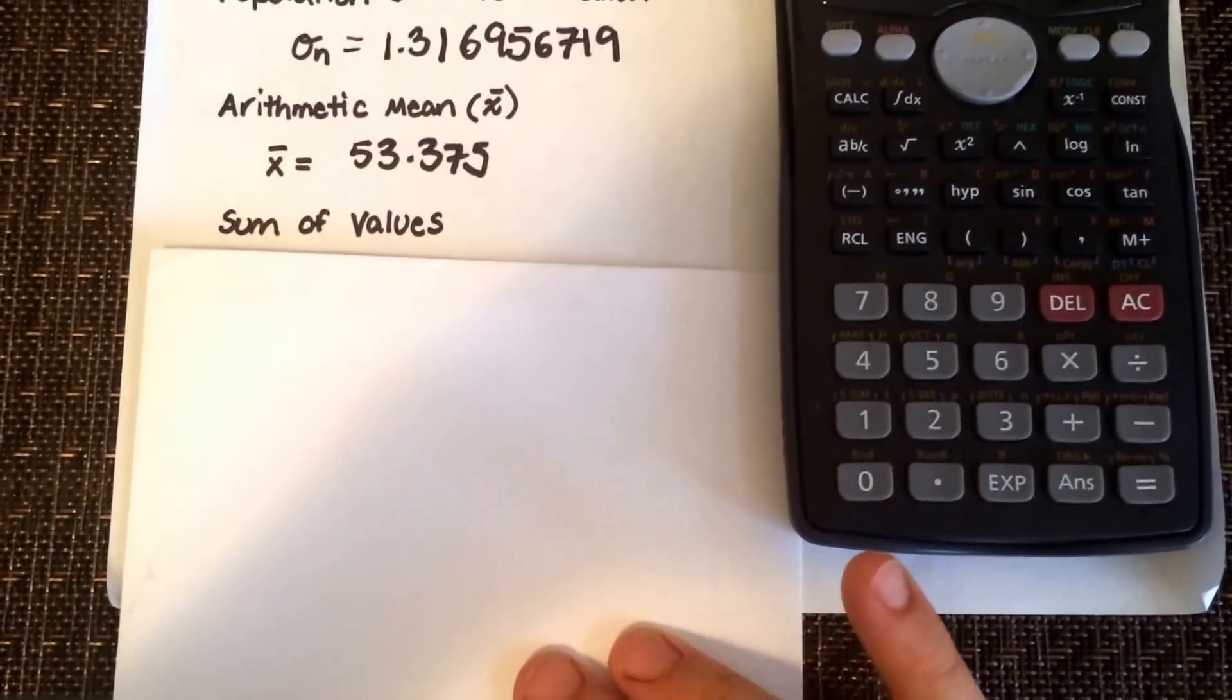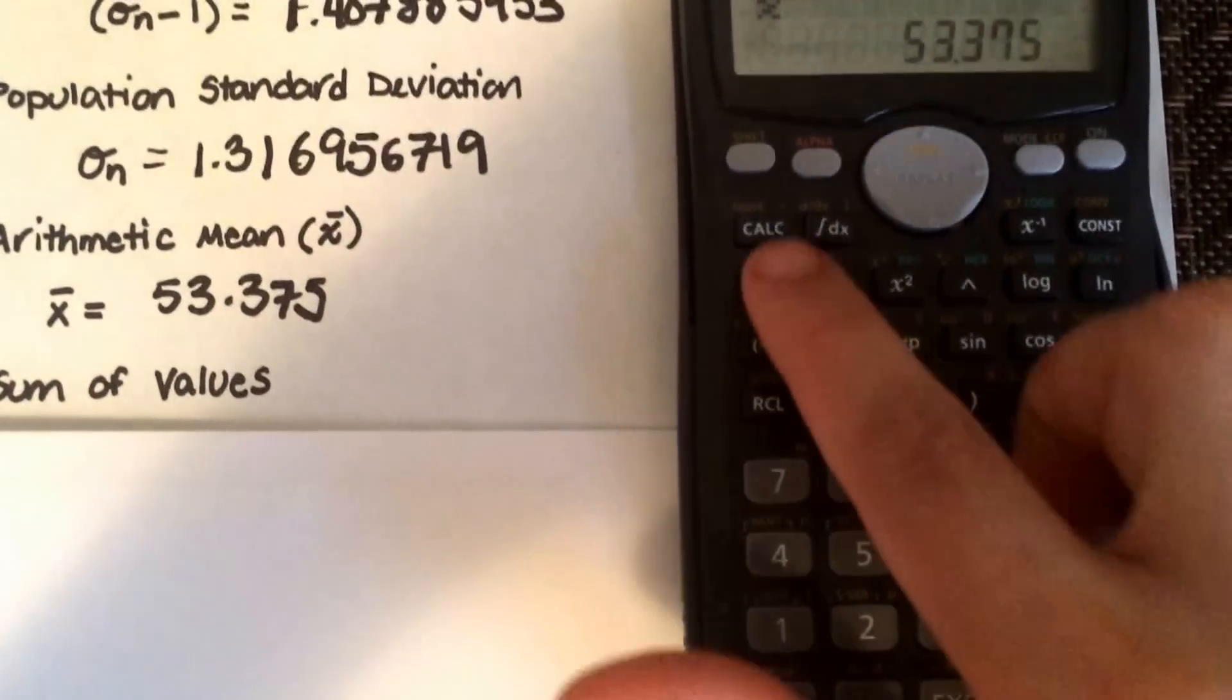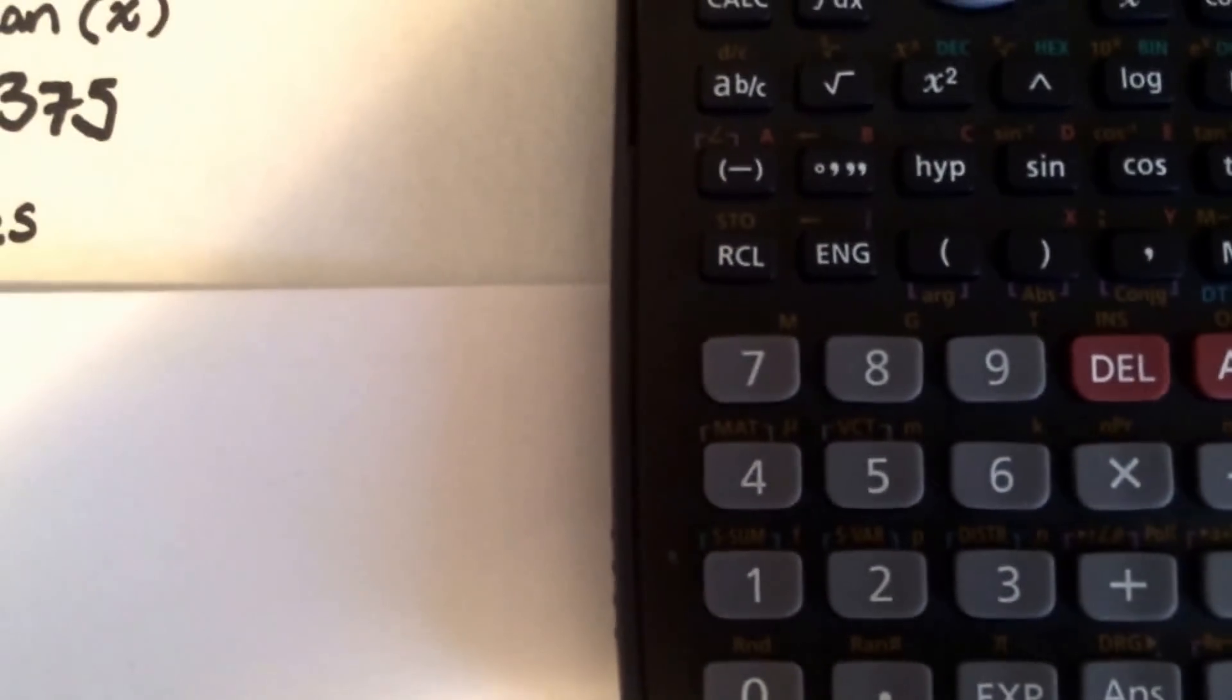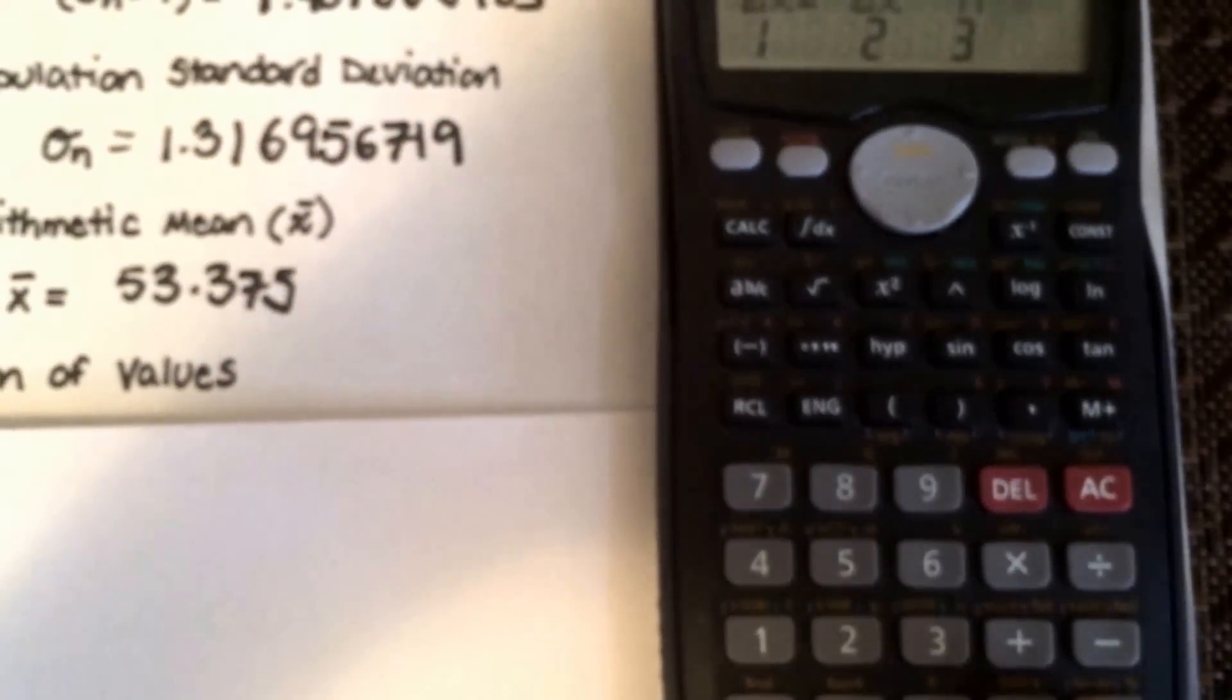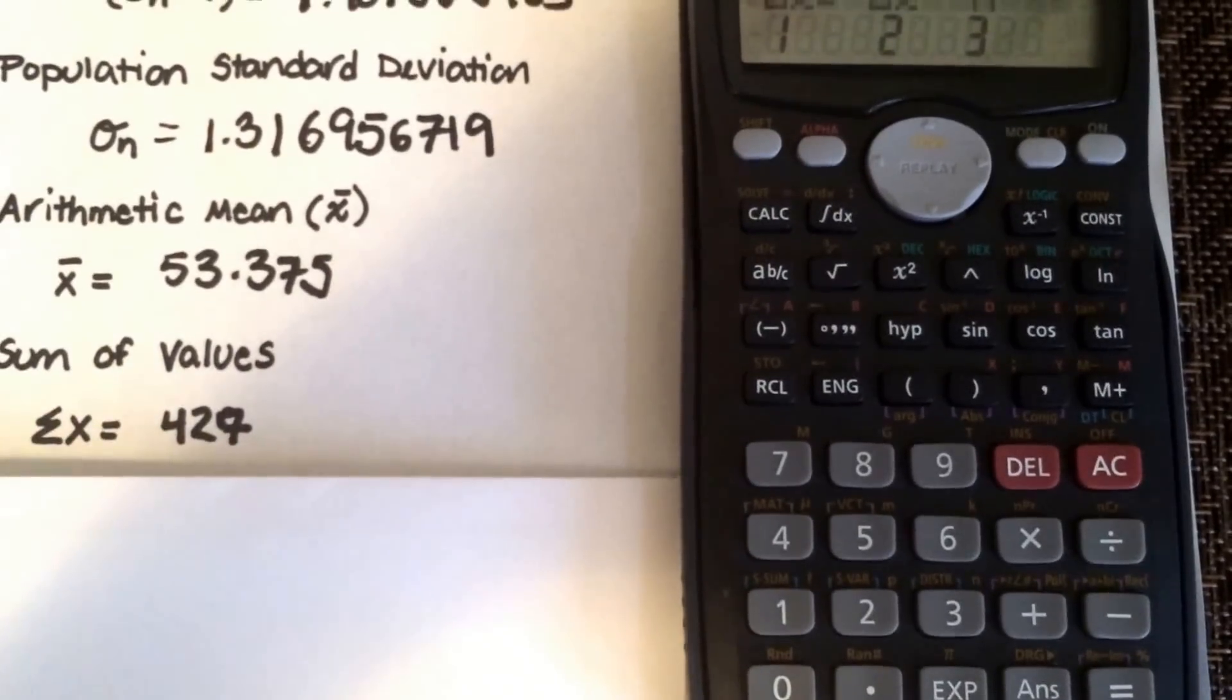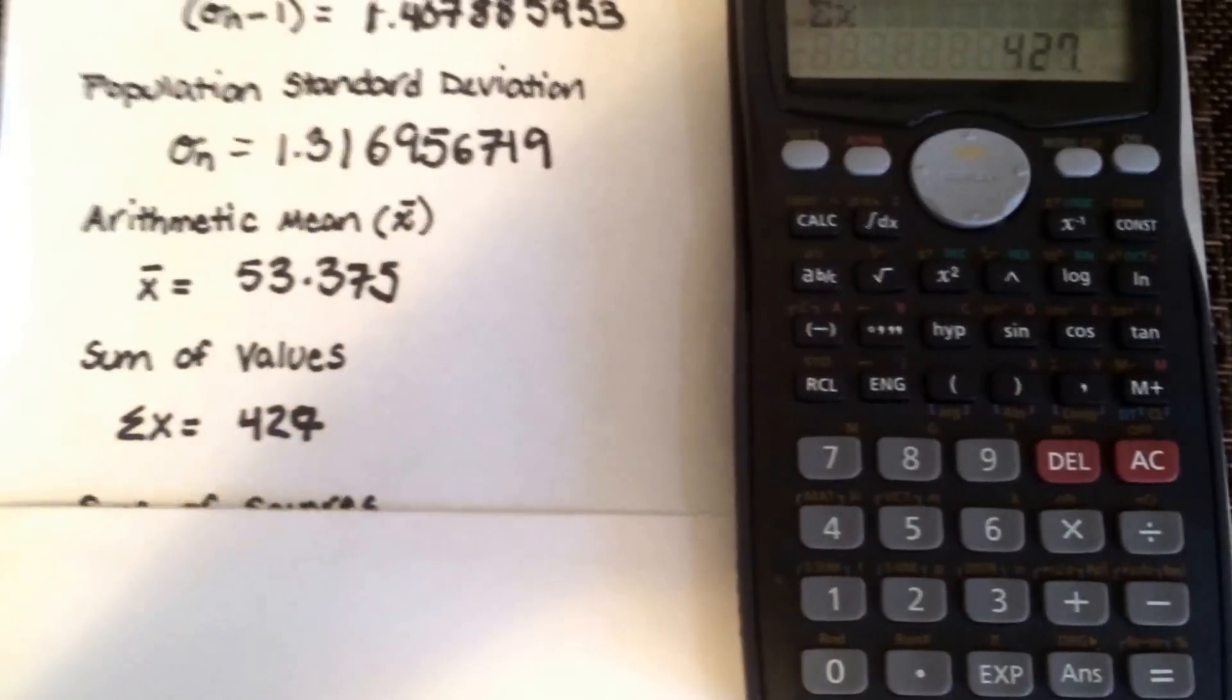And then we're going to get the sum of the values. That's actually right on top of the one, so you're going to go to shift and you'll see sum on top of one written down. That's what we're really looking for. You see all these values that you can get. The sum of values is number two. Select two and enter to get the value.